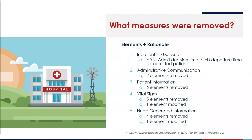The fourth element removed was vital signs — the five elements of pulse, respirations, blood pressure, temperature, and oxygen saturation — all removed because they were regularly being communicated and it was identified to be a data collection burden. The modification of vital signs did include neurological status being modified, and that is kept in the mental health or mental status orientation section.